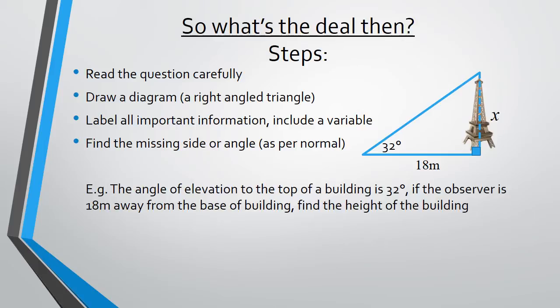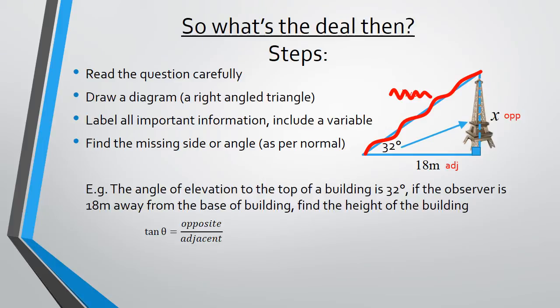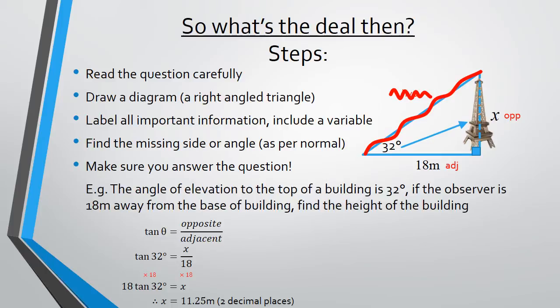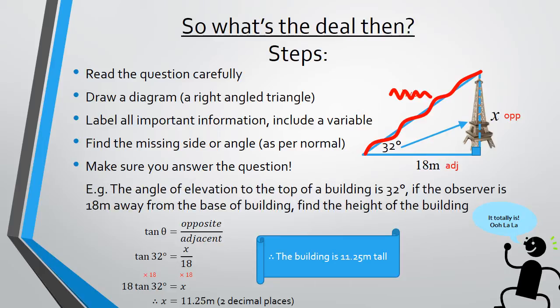Then we find the missing side or angle as per normal. In this case we have a side, so we find x using our steps — and we can see we use tan. Substituting the known information and solving, we get x equals 11.25 meters. Make sure we answer the question: therefore the building is 11.25 meters tall. Take a moment to copy that down.